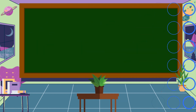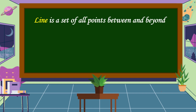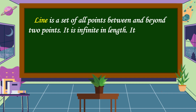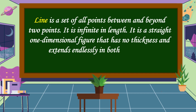What is a Line? A line is a set of all points between and beyond two points. It is infinite in length. It is a straight, one-dimensional figure that has no thickness and extends endlessly in both directions. It has length without width.